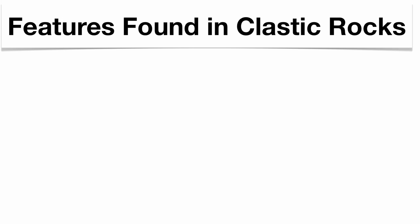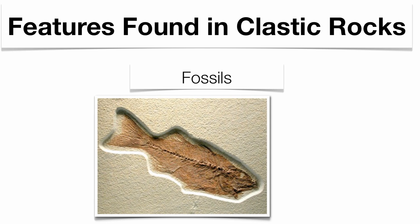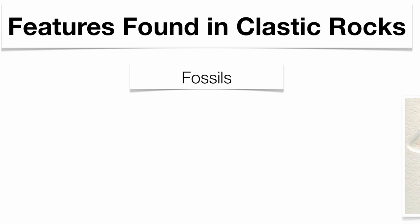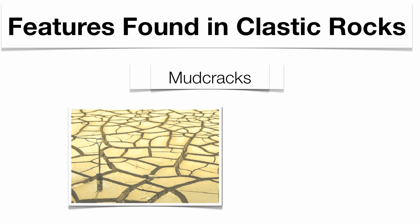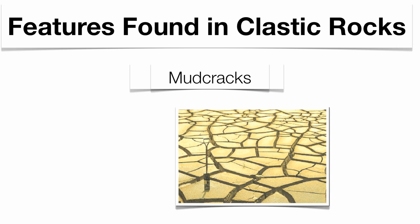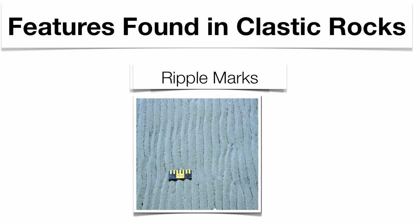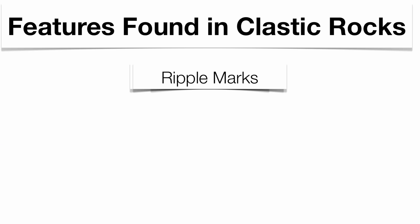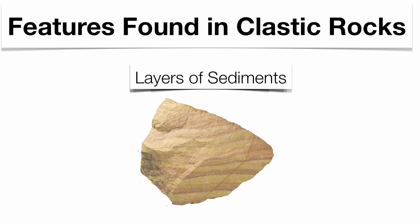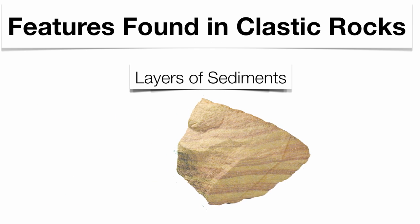The features found in clastic rocks include fossils, which are the remains of dead plants and animals locked up in the rock. We can find mud cracks, which indicate that water might have evaporated very quickly from an area. We get ripple marks, which indicate that maybe we had a shallow sea or even a desert in the region. We also have layers — the horizontal layers of sediment are a very key characteristic.